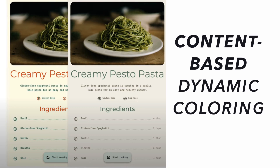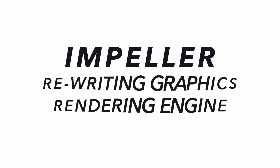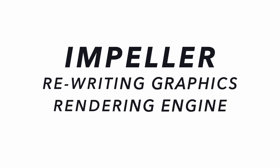You can have content-based dynamic coloring in your UI. The last key announcement about Flutter 3.7 is Impeller. Initially, Skia was used as a graphics rendering engine, but now the Flutter team is heavily investing in the new graphics rendering engine Impeller due to some limitations. As this is a very big update, I will cover this as a separate takeaway later in this video.